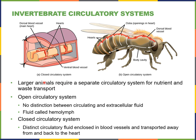Larger animals actually require a separate circulatory system for nutrient and waste transport. This is when we get into open circulatory systems versus closed circulatory systems. Open means that there's no distinction between circulating an extracellular fluid — that fluid is called hemolymph. Closed circulatory systems, like what we have, have distinct circulatory fluid that's in blood vessels and is transported to and from the heart.